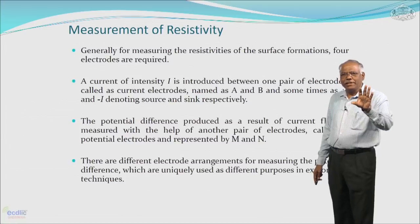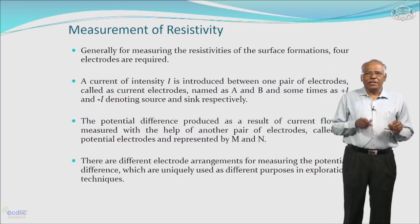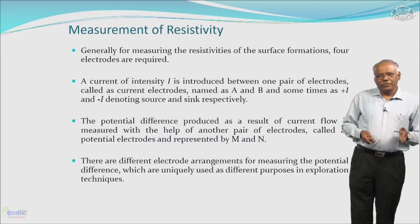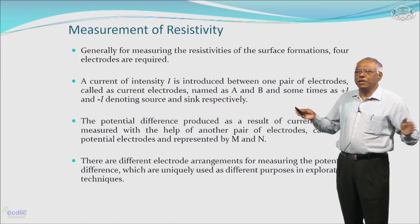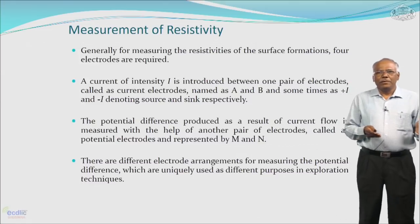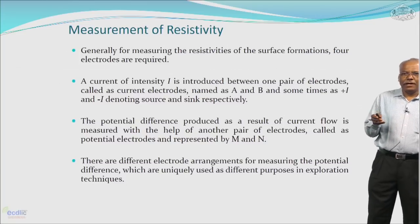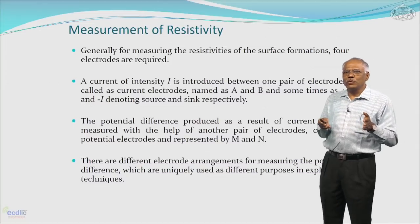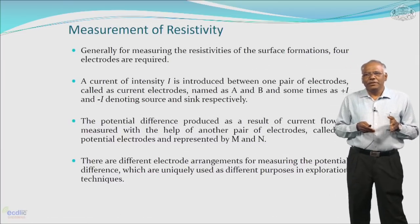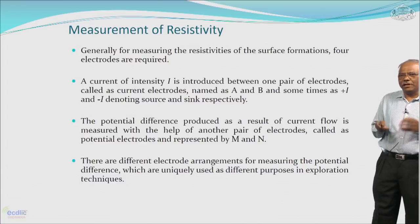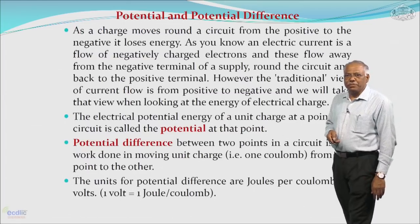The electrical resistivity of a subsurface formation is measured with four electrodes: C1 and C2 as current electrodes, and P1 and P2 as potential electrodes. Current of intensity I is introduced between one pair of current electrodes, also named A and B, or sometimes referred to as +I and –I denoting source and sink respectively. The potential difference produced as a result of the current flowing through the medium is measured with the other pair, called potential electrodes.